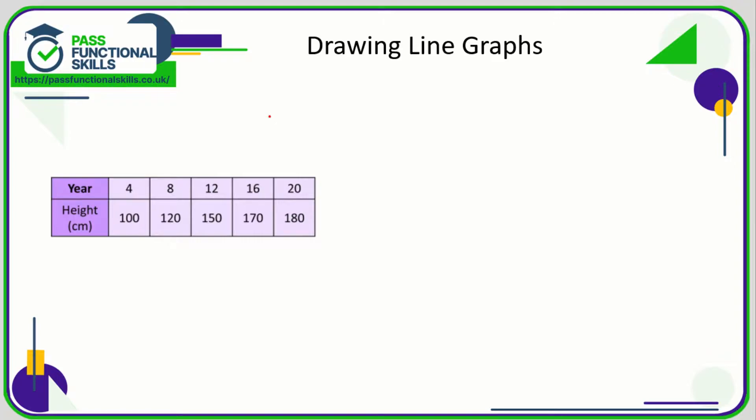Because the year is on top, the age is going to be on the horizontal x-axis, and these are the controllable variables. Up the side is going to be height. So height up the side. I think age makes a bit more sense here.